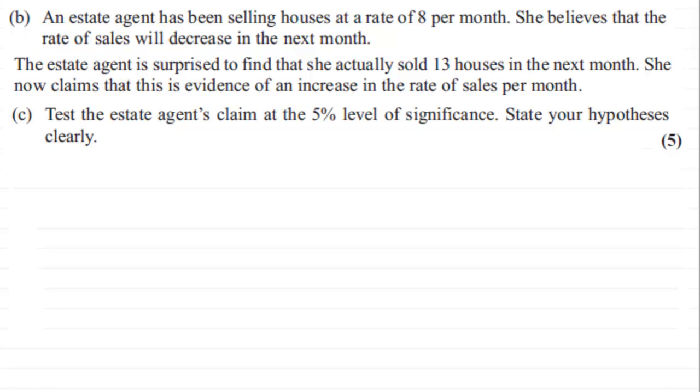Okay, welcome back. Let's see how you got on. Well, the first thing I'd want to do is to define a random variable, so I'm going to say let X be the random variable number of houses sold per month. The distribution that this would follow, X is distributed, is going to be a Poisson distribution. We've got house sales occurring at a mean rate of eight per month. Now I'm not going to put eight in here because we're going to be testing this mean rate, so I'm just going to call it lambda.